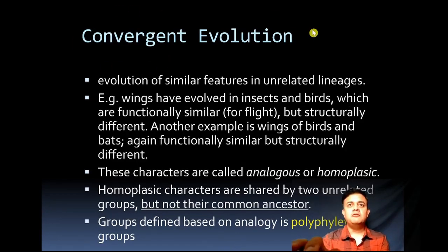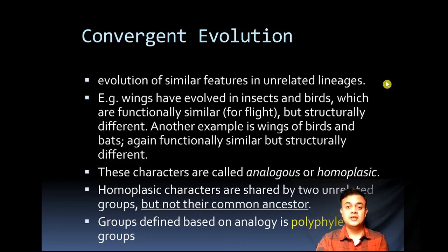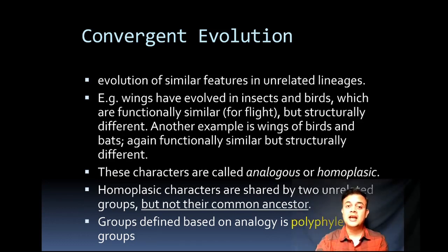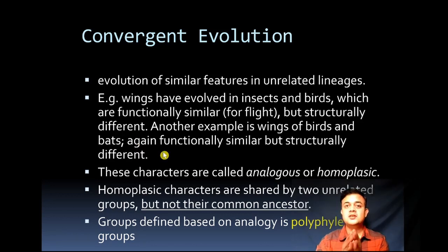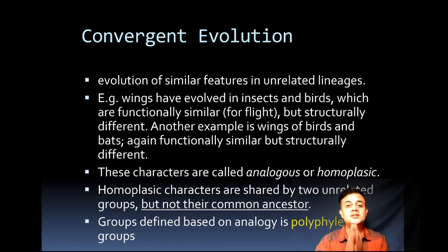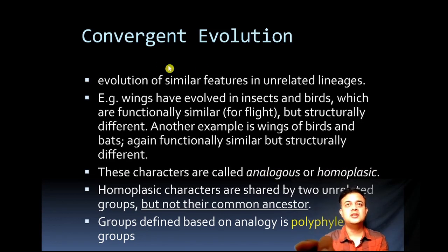Convergent evolution is the evolution of similar features in unrelated lineages. For example, wings evolved in insects and birds, which are functionally similar for flight but structurally different. Another example is wings of birds and bats — again functionally similar but structurally different. These characters are also called analogous characters or homoplastic characters.